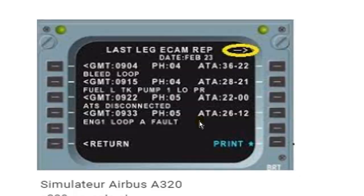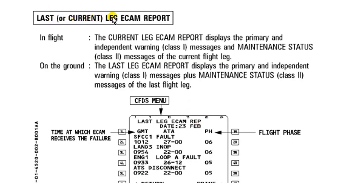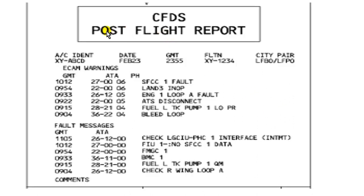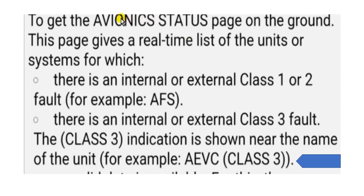This is the last leg ECAM reports. I would search about Class 3 - no Class 3 found here. Looking at the last or current record reports: Class 1 is present, Class 2 is present, but no Class 3. For the post-flight report also, I searched - no Class 3 found.